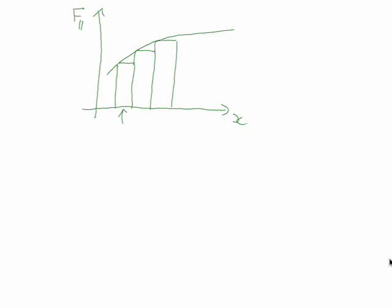Each rectangle has a width of delta x, and the force varies over time. If we assume that for this small period the force is roughly constant, then the work done in this little period — delta W — is simply the force (the component parallel to the displacement), which is f₁ in this case, multiplied by delta x.